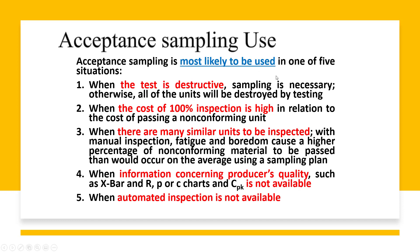Acceptance sampling is most likely to be used in one of five situations. First, when the test is destructive — if you inspect every unit destructively, all parts are destroyed, which is a loss to the company; sampling avoids this and reduces cost. Second, when the cost of 100% inspection is high — as in the bullet example, inspecting millions of bullets is impractical. Third, when testing cost relative to passing a non-conforming unit is considered. Fourth, when there are many similar units to be inspected.